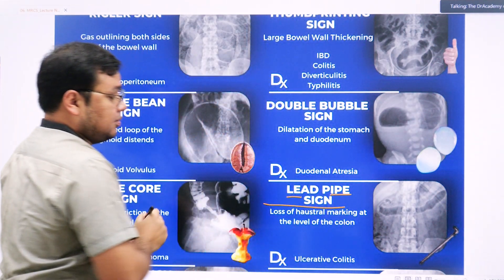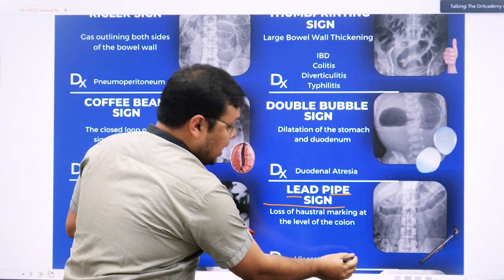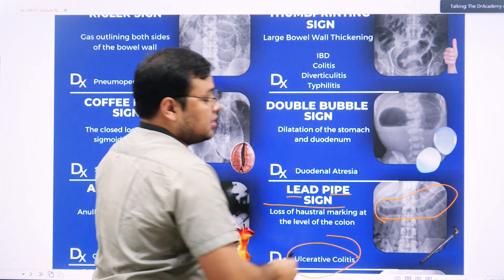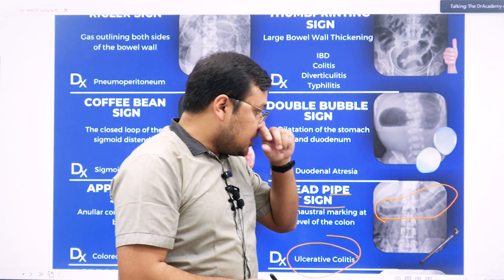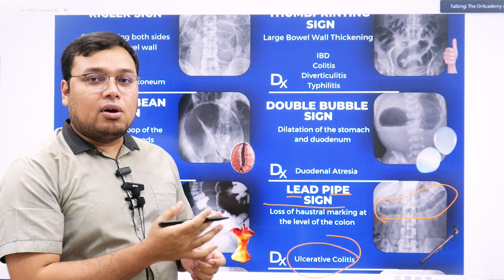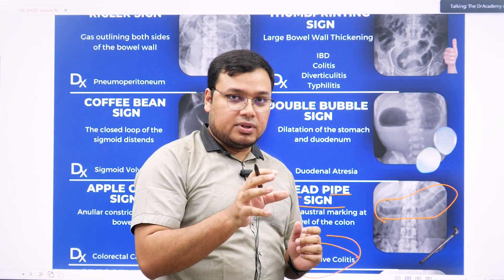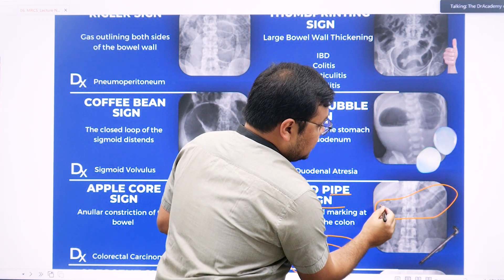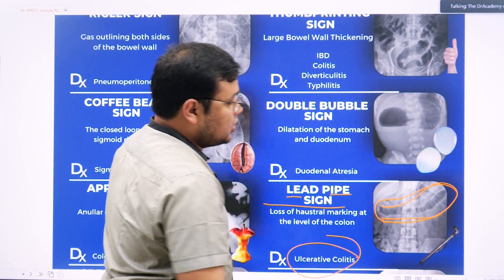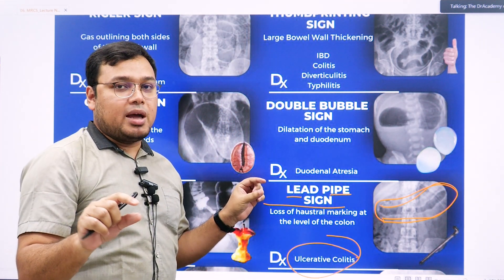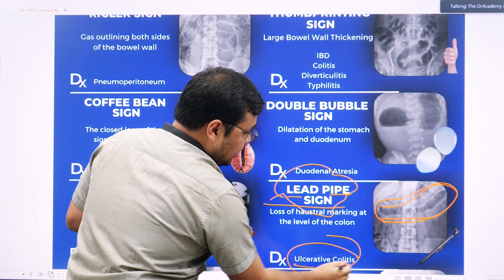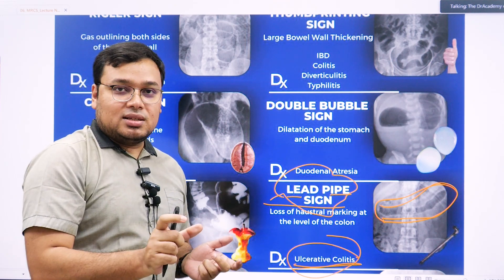The lead pipe sign is found in ulcerative colitis. Looking at the transverse colon — it should show typical features of the large intestine. Valvulae conniventes are common features of the small intestine, and haustra are common features of the large colon. In the transverse colon, the haustra are supposed to be present, but in this case the haustra have been lost. So it looks like a straight pipe — a lead pipe. Loss of haustra gives the appearance of the lead pipe sign, commonly found in ulcerative colitis.